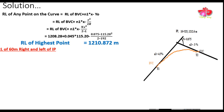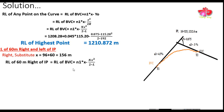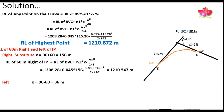For the elevation at 60 meters to the right of the intersection point, the distance from the BVC is L/2 + 60 = 96 + 60 = 156 meters. Substituting X = 156 m into the elevation formula, the RL of the point 60 meters right of the intersection point is 1210.547 meters.